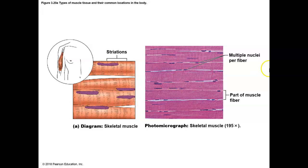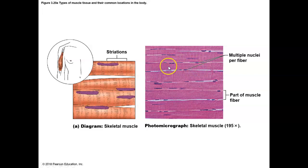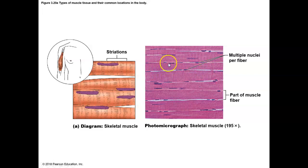Here you can see the muscle fibers. Here's one muscle fiber, and you can see a lot of different nuclei within that single fiber — there are many nuclei within one muscle fiber. And these lines running up and down on the muscle fiber are the striations I was talking about.